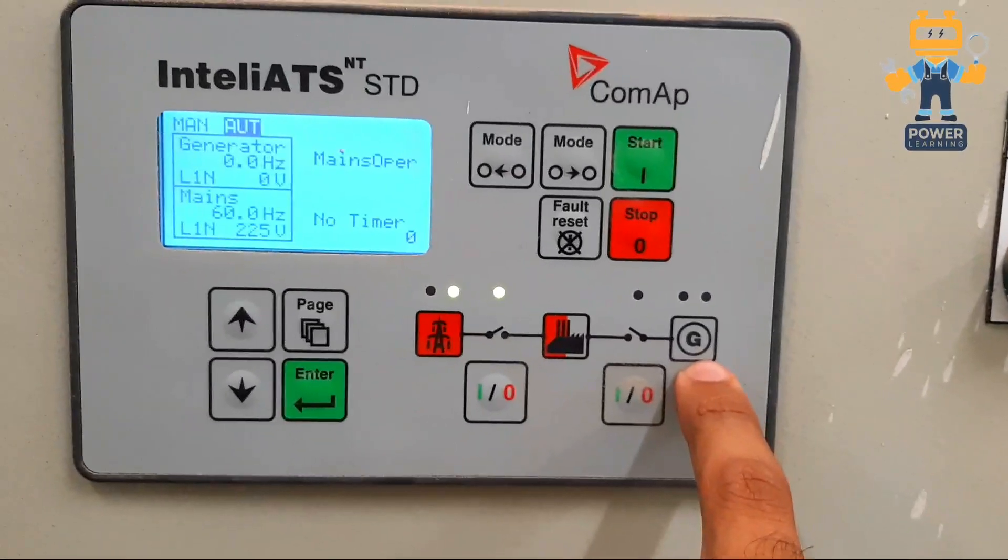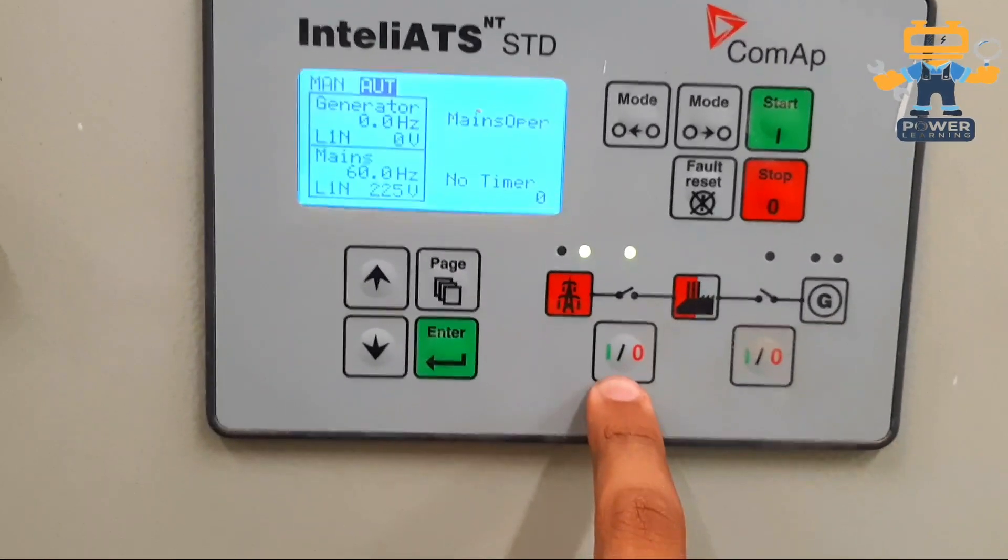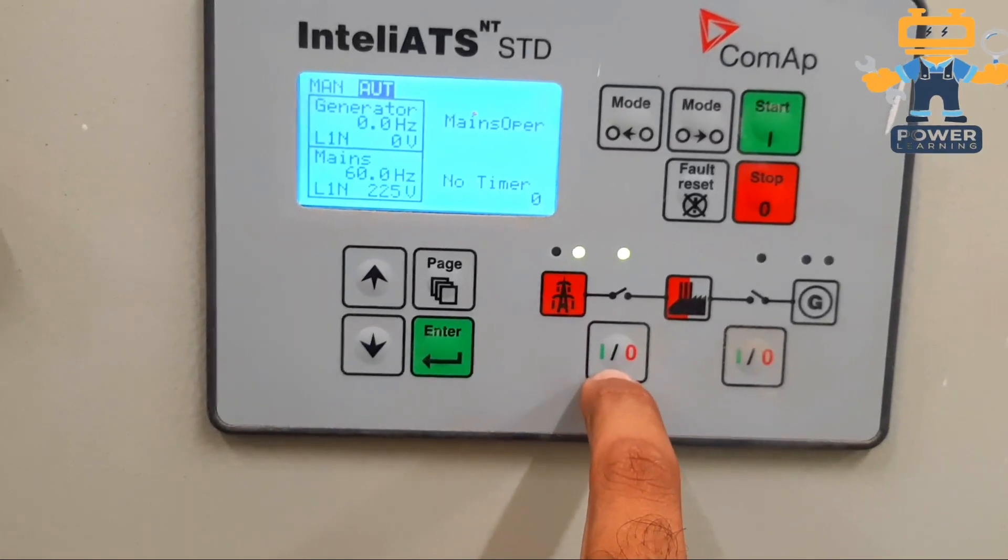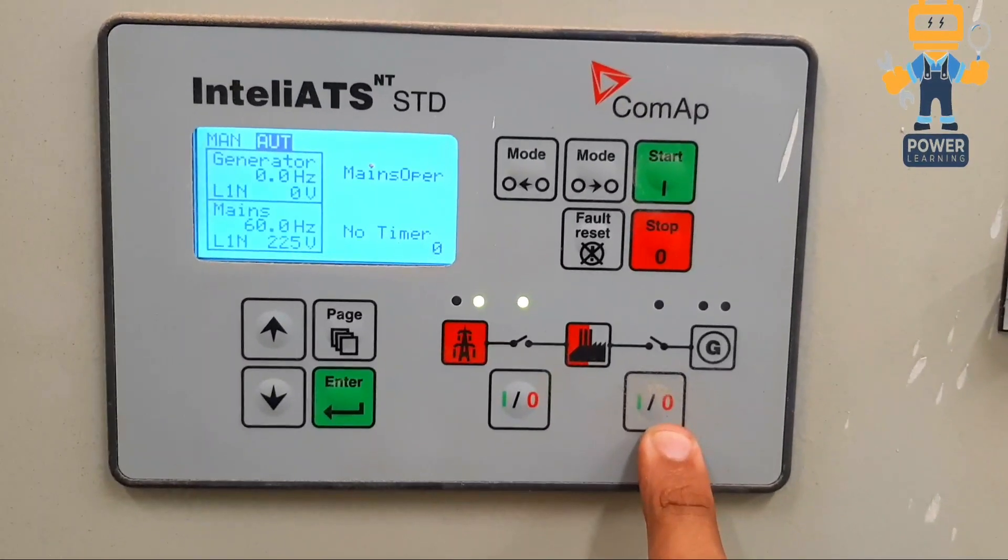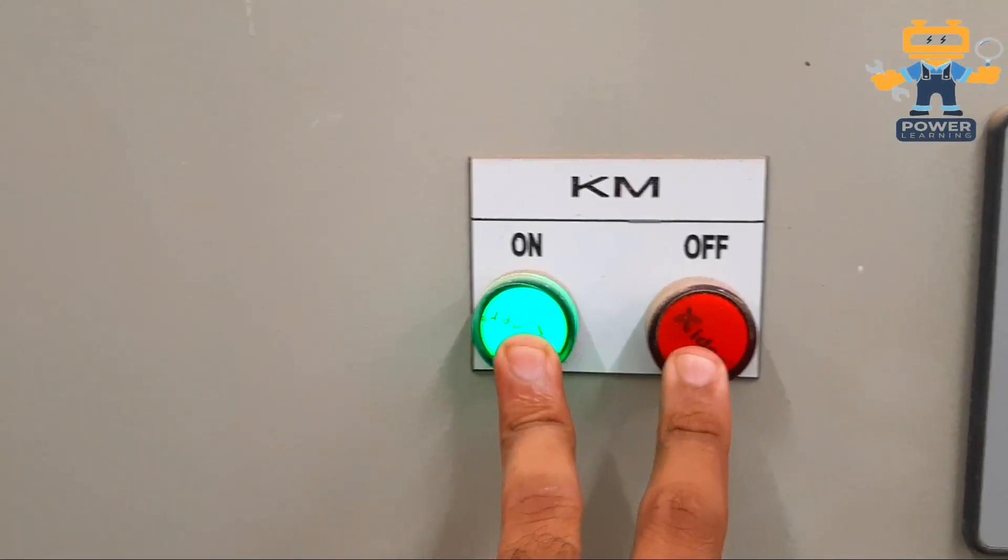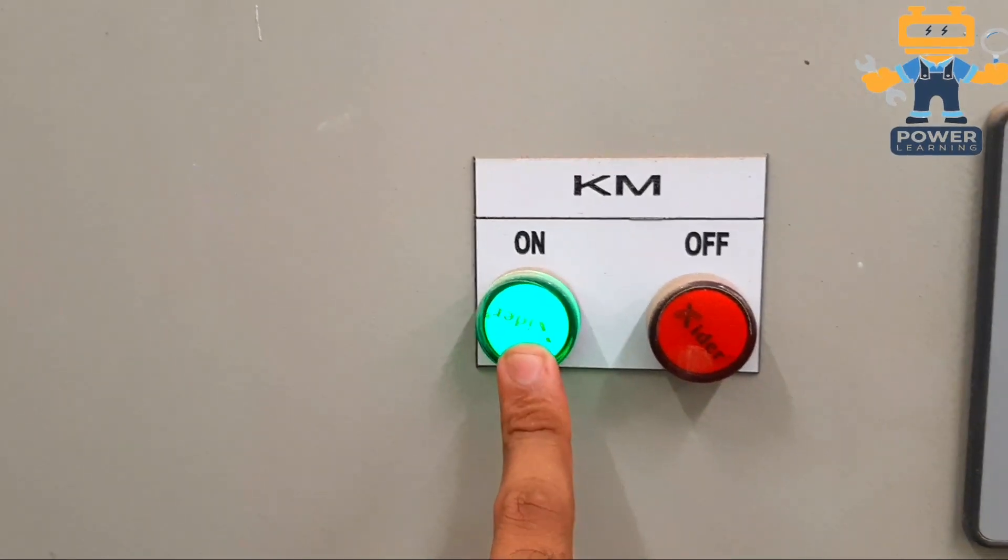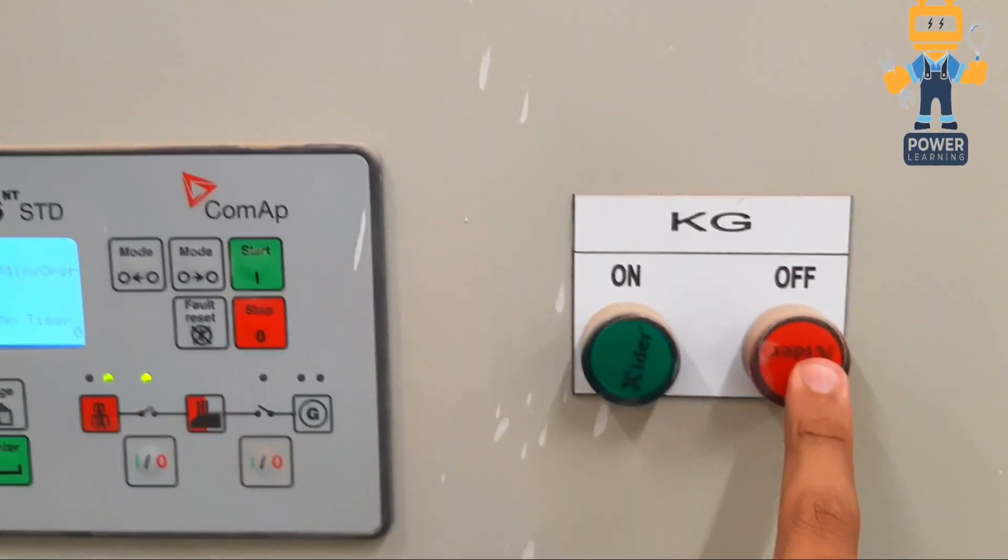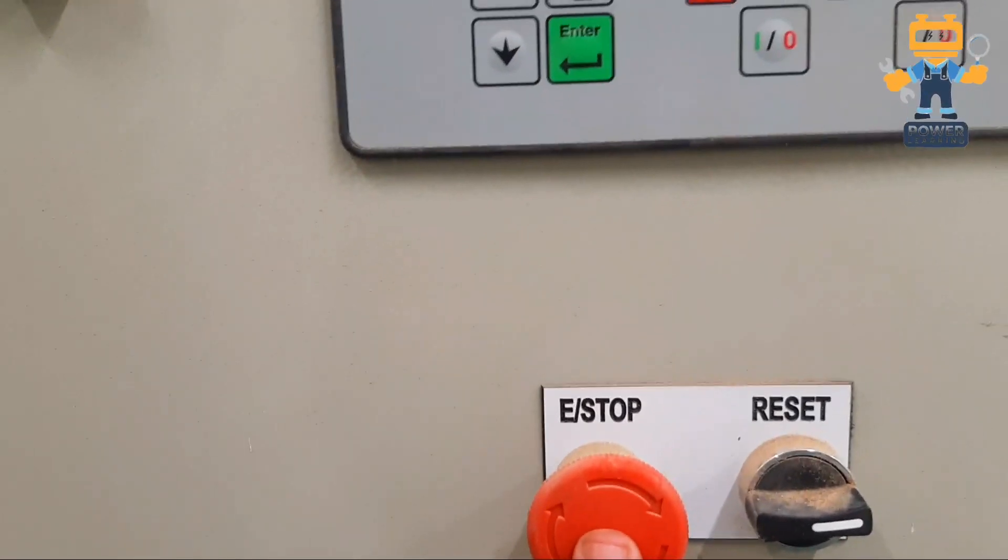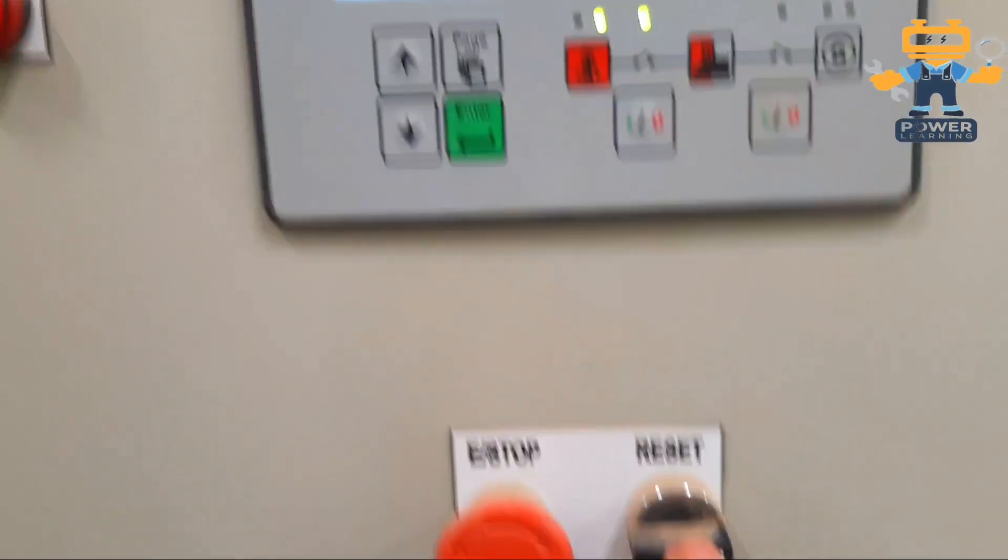Here we have load, here we have generator. This is a manual push button for turning on mains breaker, and this is for manual push button for turning on generator breaker. We have two indications. These two indications show the main supply. Now the main supply is on and there is no alarm. Generator is completely off, so there is no indication. This is our emergency stop push button and this is the reset push button.